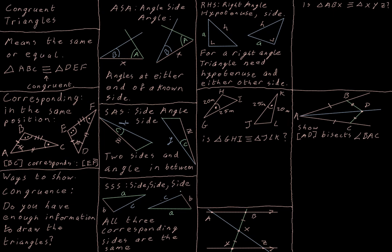Another way is simply to know all three sides — SSS. There's only one triangle that has side lengths A, B, and C for given values of A, B, and C, so if all three sides match, the triangles must be congruent. A slightly unusual but common case is RHS — right angle, hypotenuse, side. This only applies to right-angle triangles: if you know both triangles have a right angle, the hypotenuse is the same, and one other corresponding side is the same, then they are congruent.